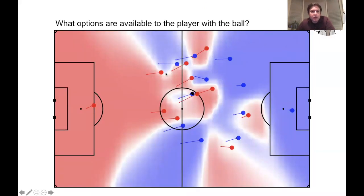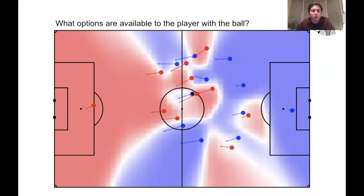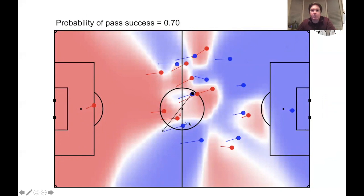To calculate the full pitch control surface, we break the field down into a grid of little pixels. Within each pixel we calculate the ball travel time, the time for all players to arrive along with the associated uncertainty, and the probability that each player and therefore each team would control the ball. We then repeat this across every pixel in the grid. Looking at the pass that player 20 actually made, the pitch control model suggests the probability of pass success was 0.7 — and indeed it was successful, with player 24 receiving it and gaining control.